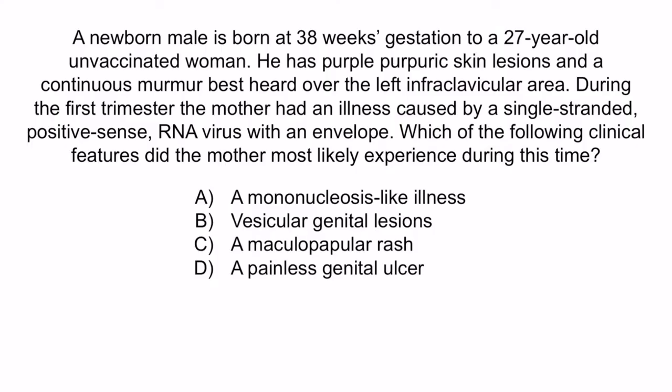Now let's review with a question. A newborn male is born at 38 weeks gestation to a 27-year-old unvaccinated woman. He has purple purpuric skin lesions and a continuous murmur best heard over the left infraclavicular area. During the first trimester, the mother had an illness caused by a single-stranded positive sense RNA virus with an envelope. Which of the following clinical features did the mother most likely experience during this time? A, a mononucleosis-like illness. B, vesicular genital lesions. C, a maculopapular rash. Or D, a painless genital ulcer.